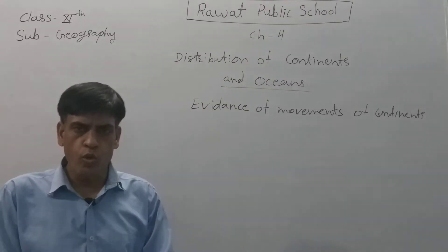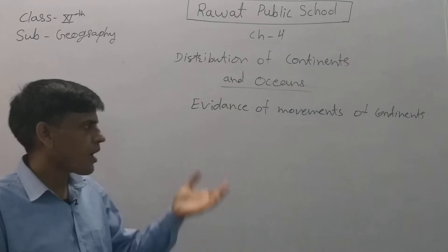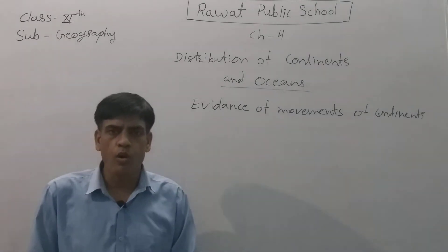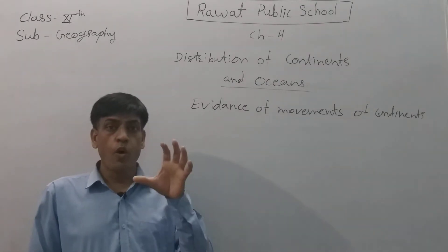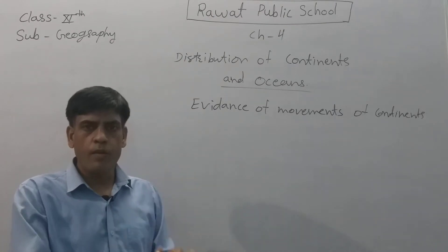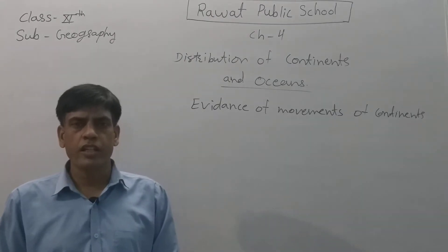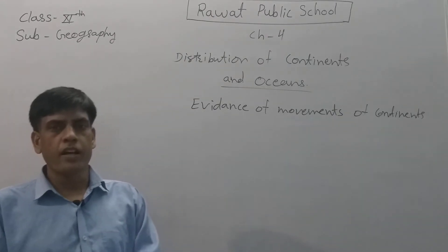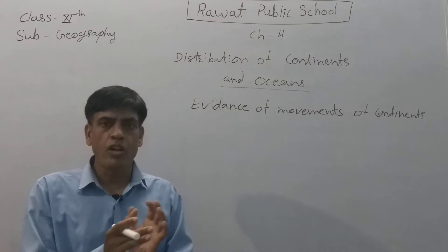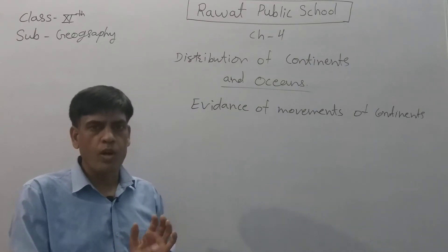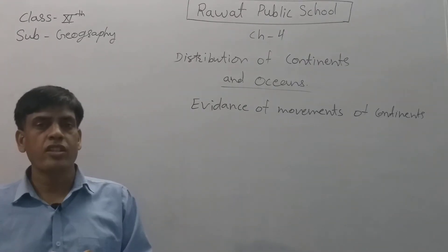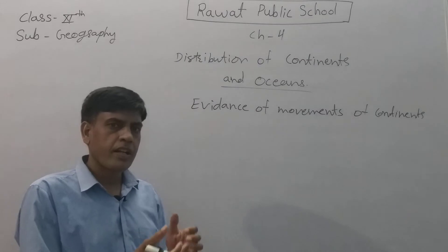Pangea splits into two parts. The upper or northern part is called Laurasia or Angara land, and the lower part is called Gondwana land. And it separates a small water body called the Tethys.